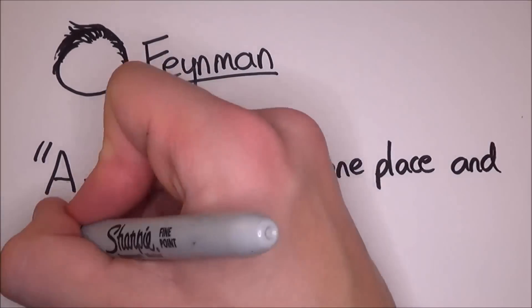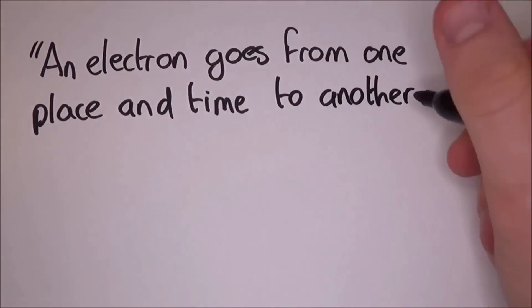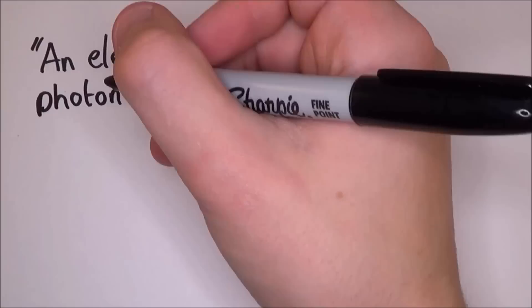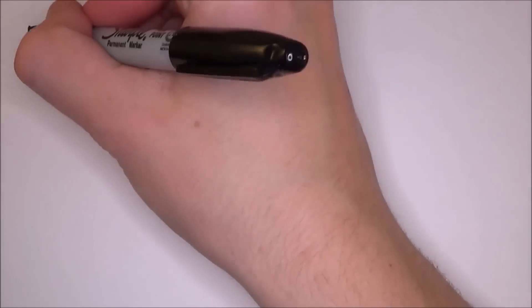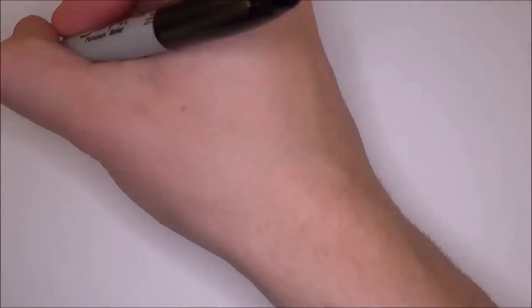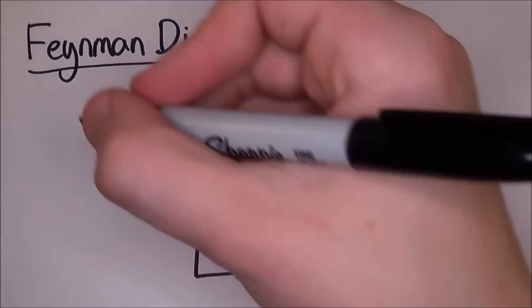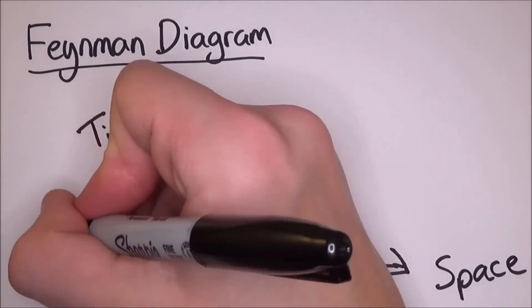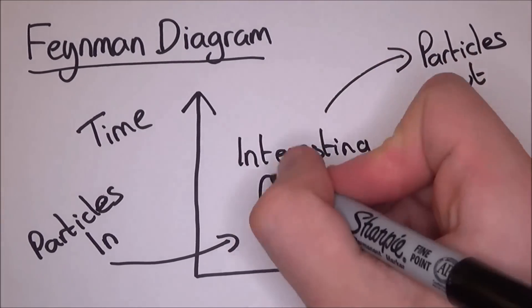A photon goes from one place in time to another place in time. An electron goes from one place in time to another place in time. An electron emits or absorbs a photon at a certain place and time. These three statements can be represented on a diagram. The way that a Feynman diagram works is that time is always going up, with particles coming in at the bottom and going out at the top, and whatever is happening in the middle.